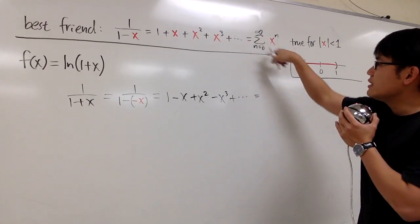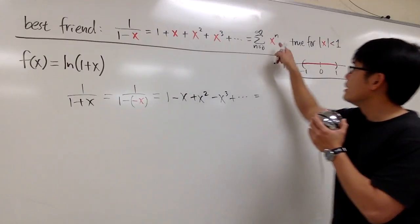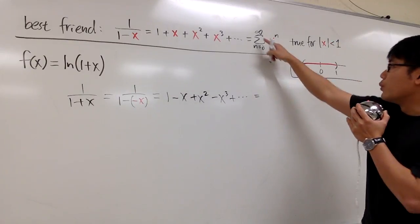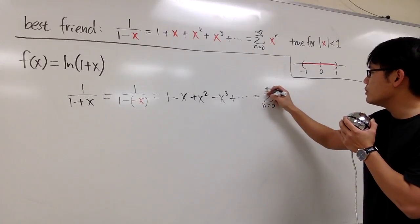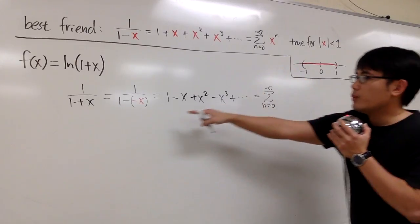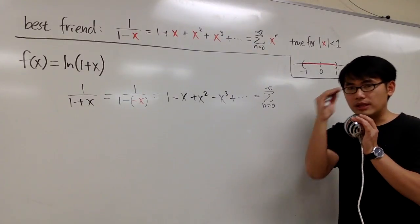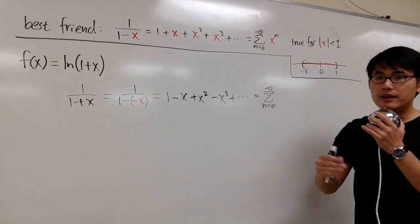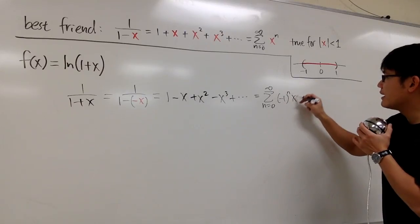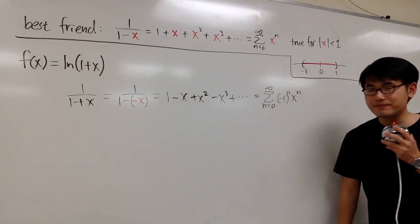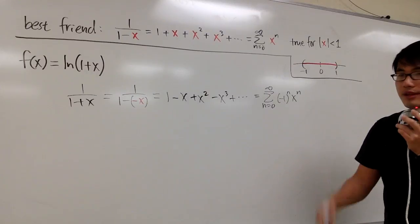To get the sigma notation version, we plug negative x into the x in the geometric series. We write sigma from n=0 to infinity of negative x to the nth power, which is equivalent to negative 1 to the nth power times x to the nth power.